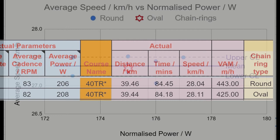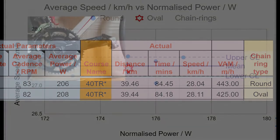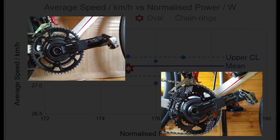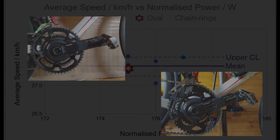In this video, I'll compare the speed data for both the round and the oval chainrings, to see whether those oval chainrings do give a speed boost or not.